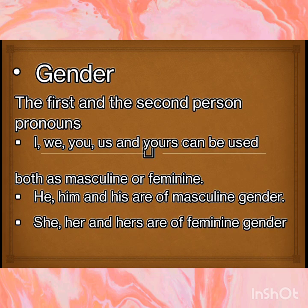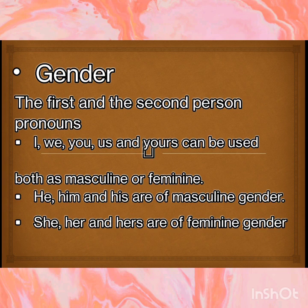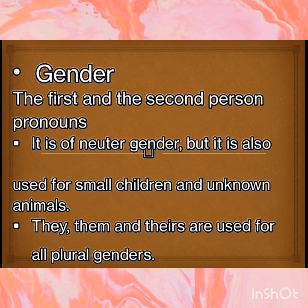Gender. The first and second person pronouns — I, we, you, us and yours — can be used both as masculine or feminine. He, him and his are of masculine gender. She, her and hers are of feminine gender. It is used for the neuter gender, but it is also used for small children and unknown animals. They, them and theirs are used for all plural genders.